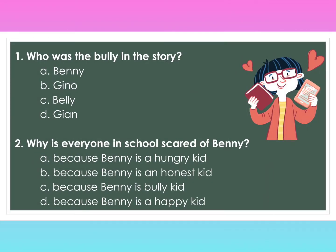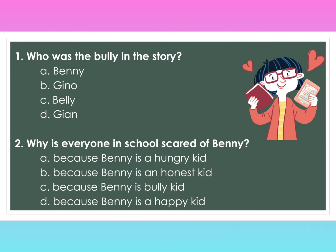Number one: Who was the bully in the story? A. Benny, B. Gino, C. Belly, D. Gian. Number two: Why is everyone in school scared of Benny? A. Because Benny is a hungry kid. B. Because Benny is an honest kid. C. Because Benny is a bully kid. D. Because Benny is a happy kid.